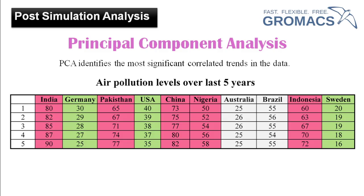That's the trend present within this data — these five countries are following a similar trend of increasing pollution. Similarly, Germany, USA and Sweden are also following a trend where pollution level is decreasing. For Australia and Brazil the pollution level is constant over the years — this is neutral data, and in PCA such data is excluded or removed to make the data set simpler.